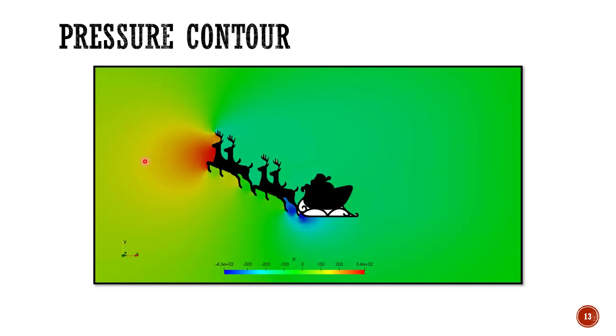This is the pressure contour which shows us that the pressure builds up as the air directly strikes the first reindeer.